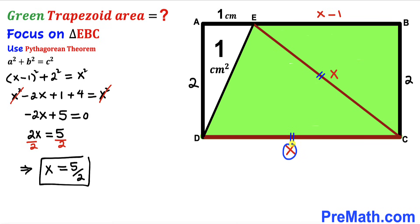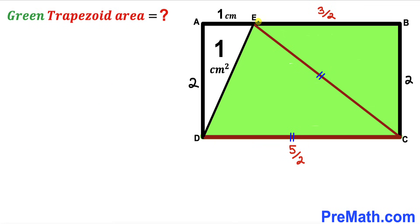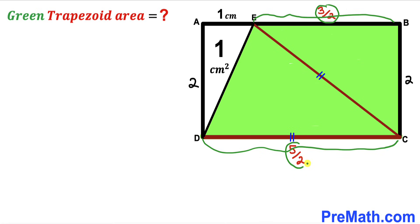So x equals 5/2. The value of x minus 1 is 5/2 minus 1, which equals 3/2. Therefore, one base of the trapezoid is 3/2 and the other base is 5/2.